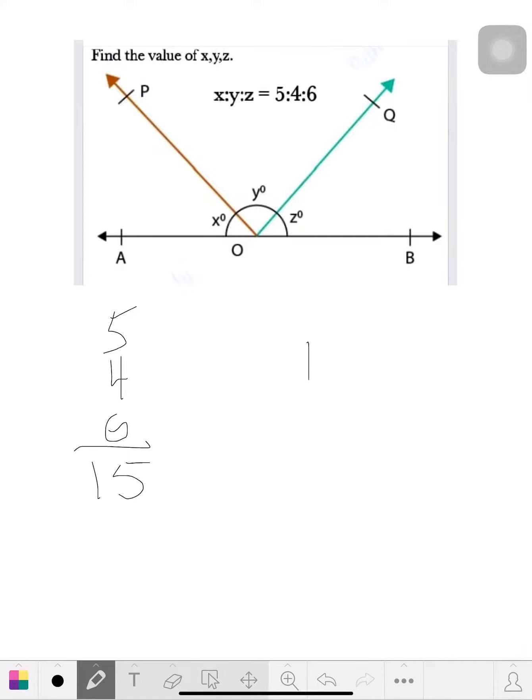So take the 180, divide by 15, and it's, let's see, 1, 15, 3, carry the 0 down, you got a 2. So each one of these units is worth 12.